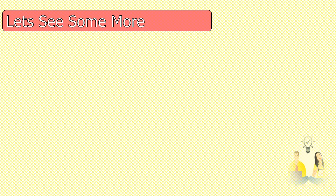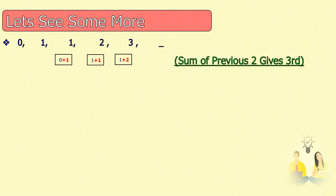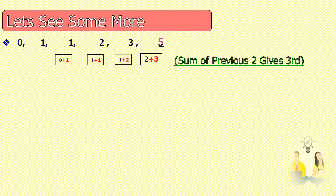Let's see some more. Here, adding one constant or a decreasing difference is not going to give us the next number, so the pattern is something different. If you observe, the sum of the two previous numbers gives you the third number. So 0+1=1, 1+1=2, 2+1=3, and 2+3=5.